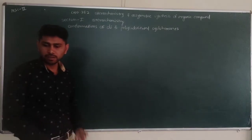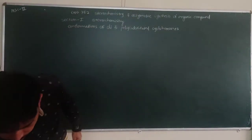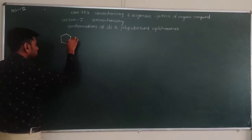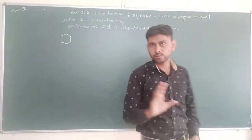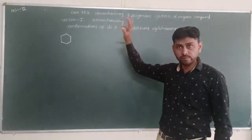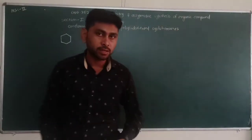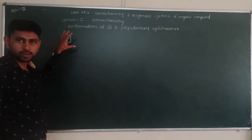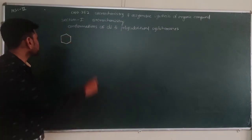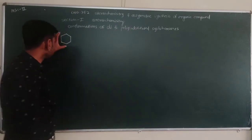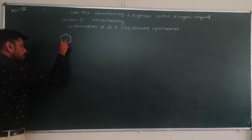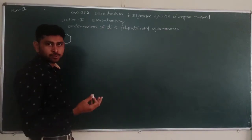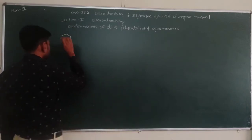The first topic is the conformations of di- and poly-substituted cyclohexanes. Let's start with the structure of cyclohexane. Cyclohexane is a six-membered cyclic saturated compound. We know that it has two conformations — chair conformations — out of which the most stable form is the chair conformation.